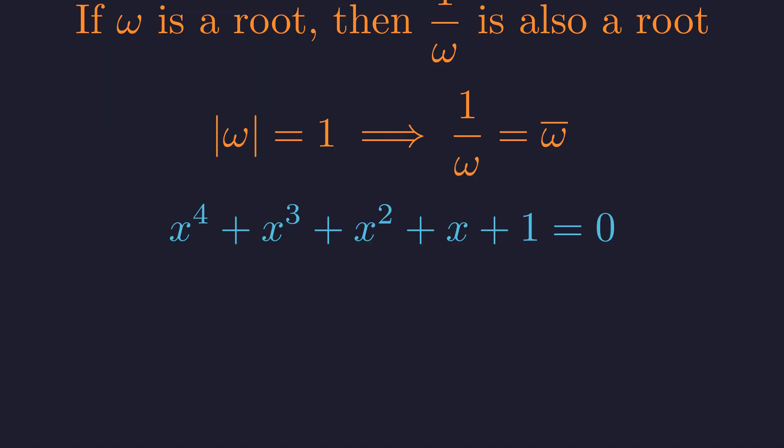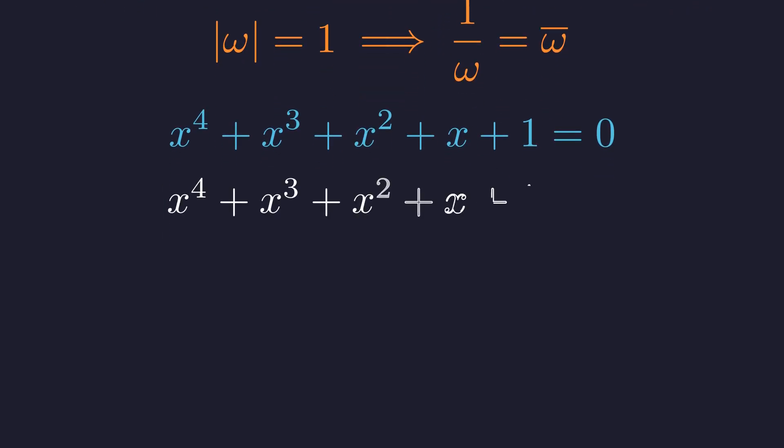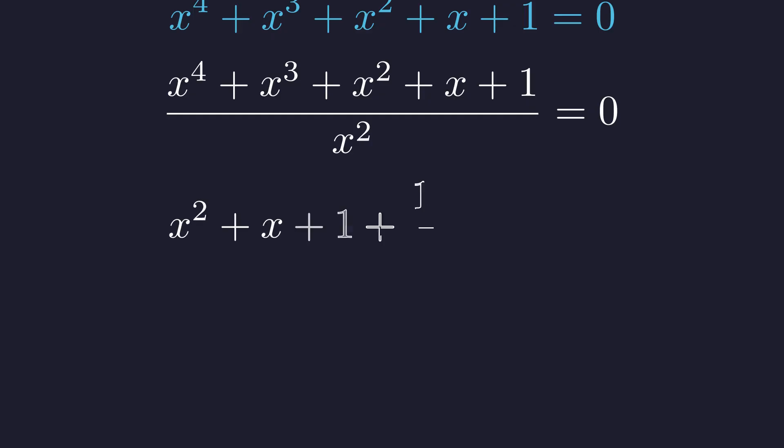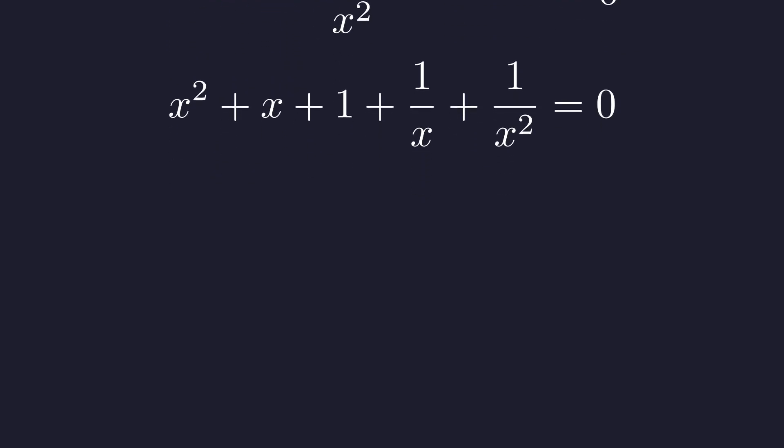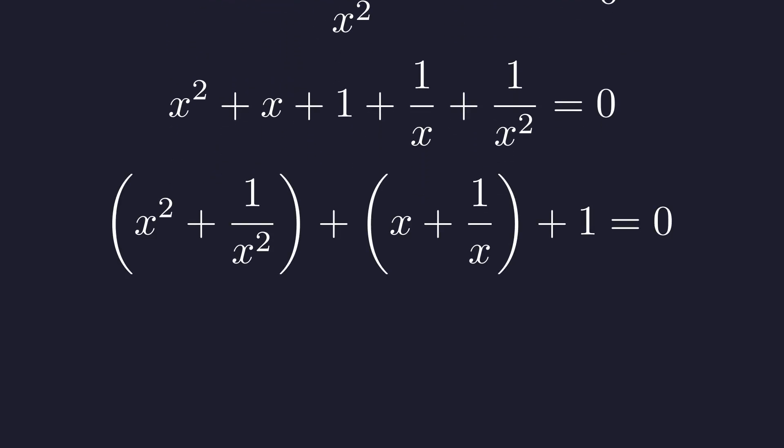Let's focus on solving this quartic equation. The key insight is to use the reciprocal symmetry. Notice that x to the fourth and x are reciprocals when we divide by x squared. Similarly, for x cubed and x squared. Let's divide the entire equation by x squared. Since none of our roots are zero, this is valid. This gives us an equation with reciprocal terms clearly visible. Now we can group the reciprocal pairs. x squared and 1 over x squared go together. And x and 1 over x go together. Regrouping the terms this way reveals the structure we need.